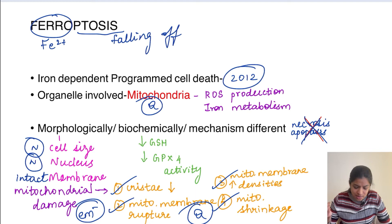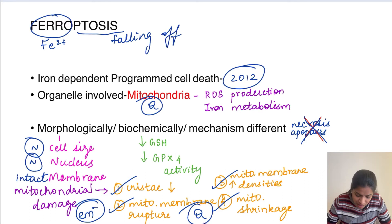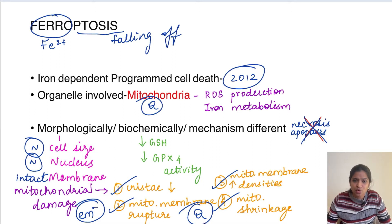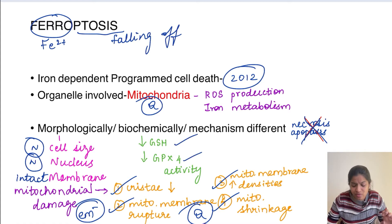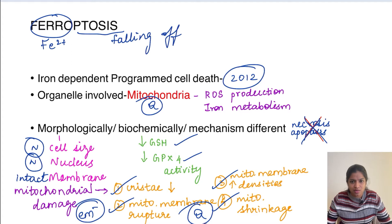Biochemically, glutathione (GSH) — an important antioxidant — is decreased. GPX4, glutathione peroxidase 4, the main enzyme for free radical removal, is also decreased. So both glutathione and glutathione peroxidase are reduced, resulting in an increase in free radicals. These free radicals cause membrane lipid peroxidation and membrane damage.